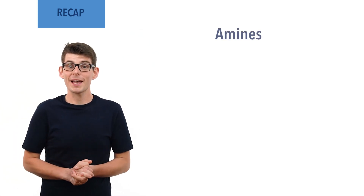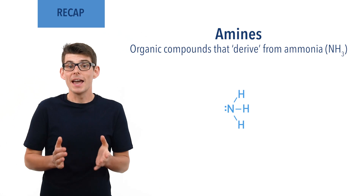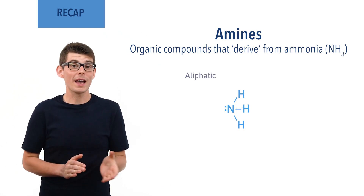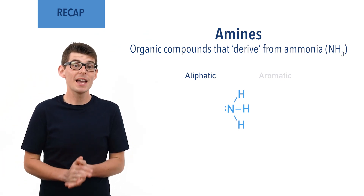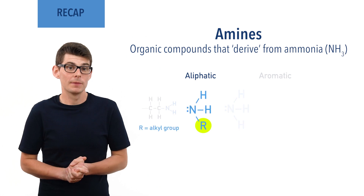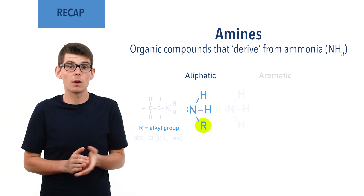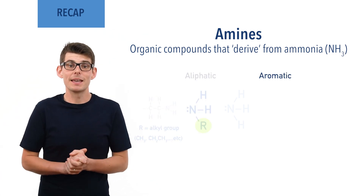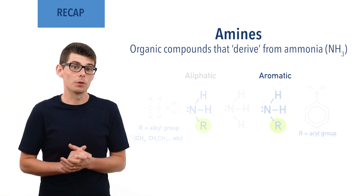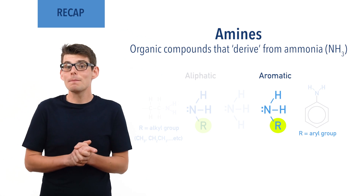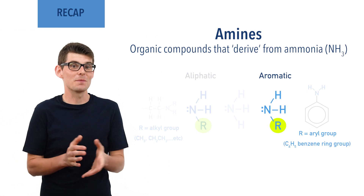Amines are a group of organic compounds that derive from ammonia, NH3. Amines can be aliphatic or aromatic. In aliphatic amines, one or more of the hydrogen atoms in ammonia has been replaced with an alkyl group — a straight or branched carbon chain such as methyl or ethyl. In aromatic amines, one of the hydrogen atoms has been replaced with an aryl group, such as phenyl — effectively a benzene ring with something else attached.